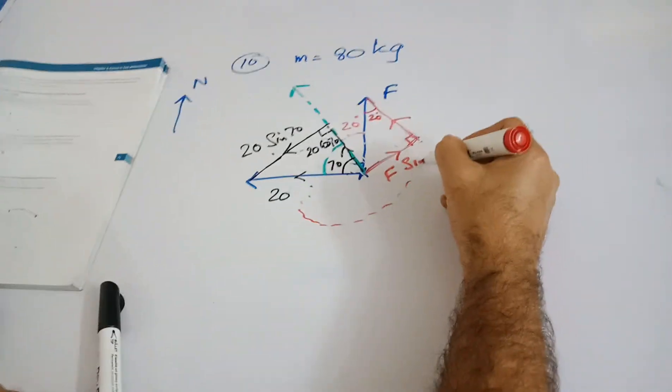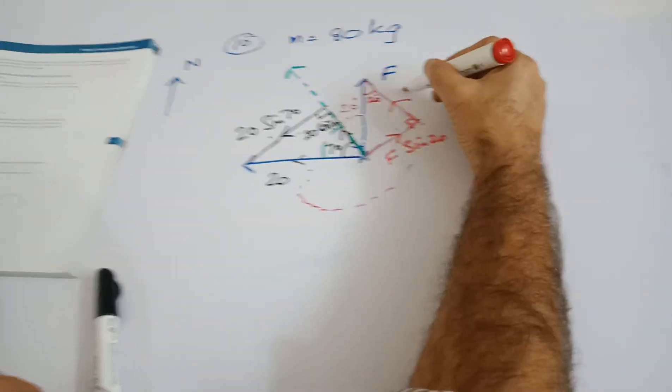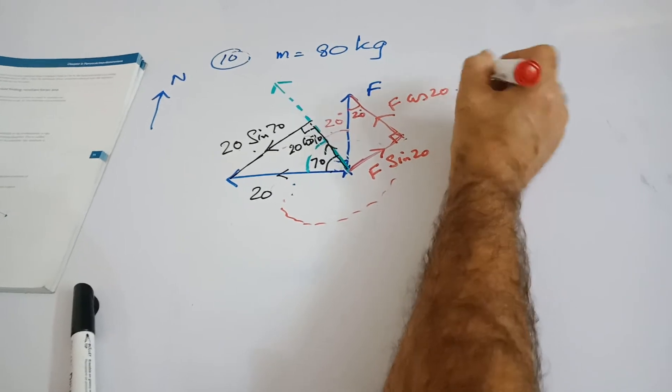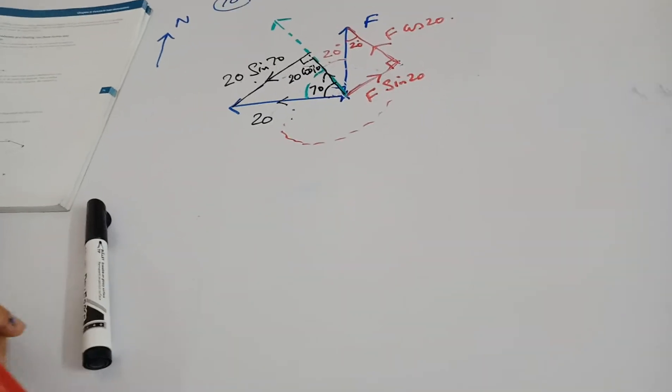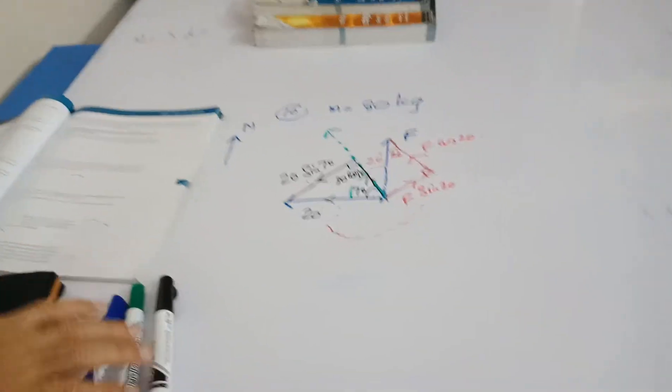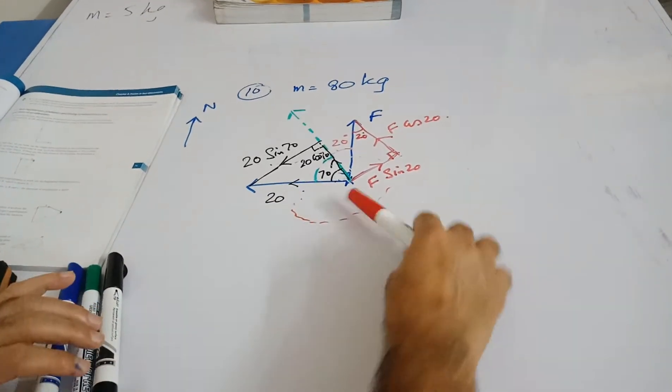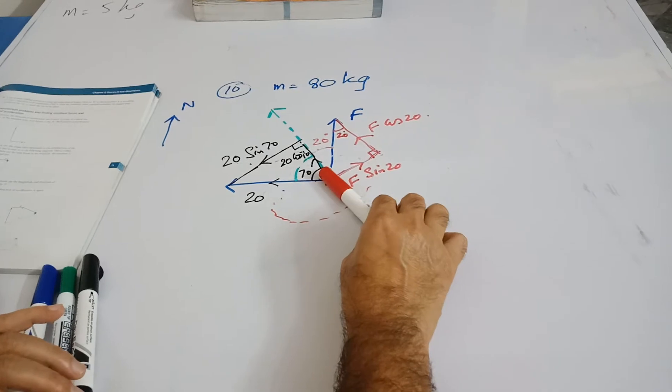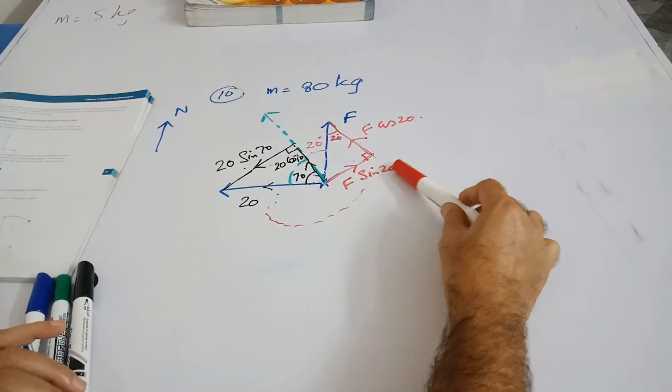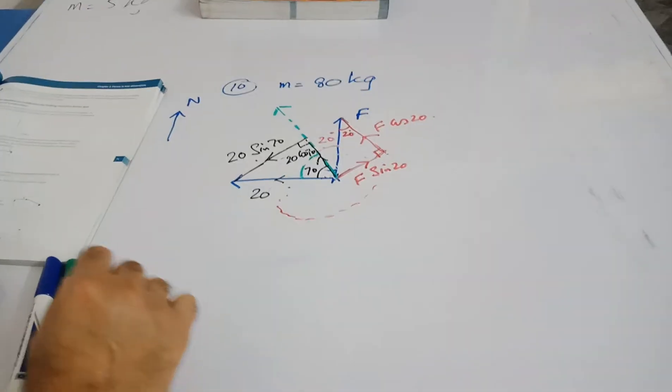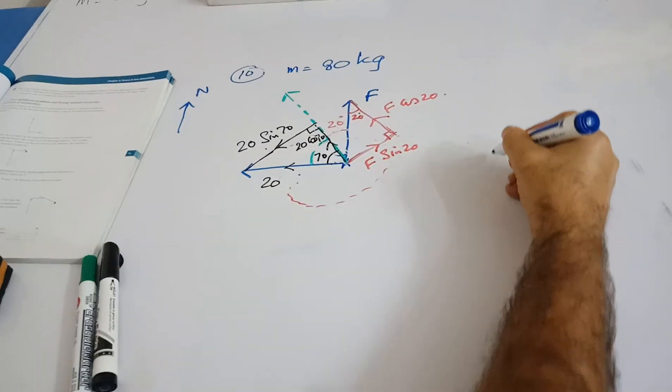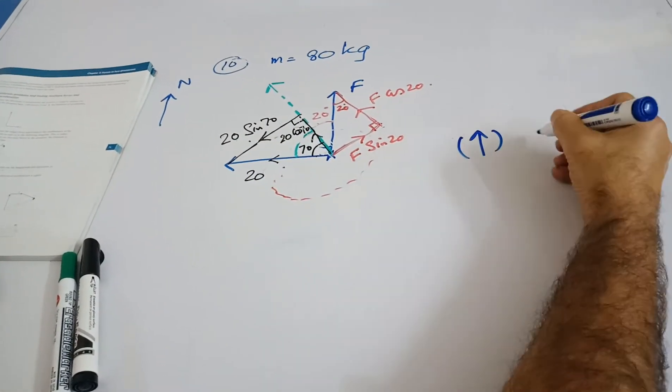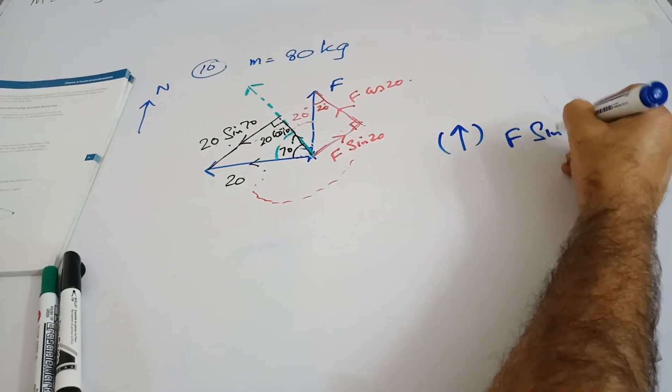Now this is going to be like this. This is your F sine 20 and this is your F cos 20. Now this is up to you which components you equate first. This is in this direction, this is in equilibrium, so I can put this F sine 20 equal to this 20 sine 70.